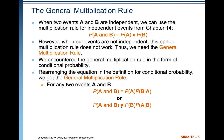How would you figure out the probability of getting, say, the Queen of Hearts and the Ace of Diamonds? You use the general multiplication rule: the probability of A times the probability of B given A. And we can reverse the condition and do the probability of B times the probability of A given B.